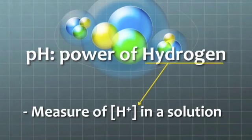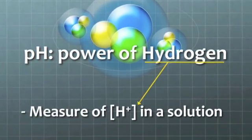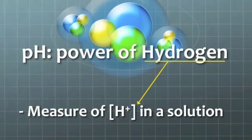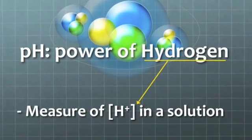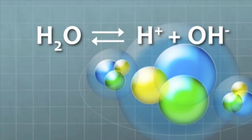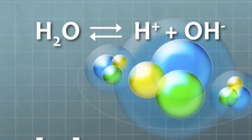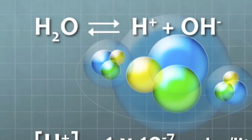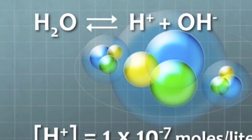pH literally means power of hydrogen, and it is used to measure the concentration of H-plus in a solution. To a very small extent, liquid water, or H2O, breaks down to form H-plus and OH-.